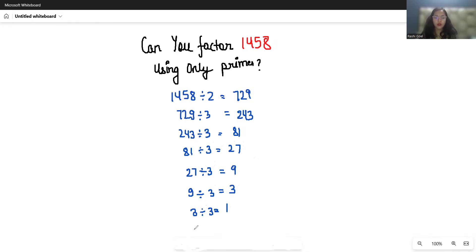So 1458 in terms of prime factorization is 2 times 3 to the power of 6. It's amazing how one even number and a power of 3 makes up a big number.